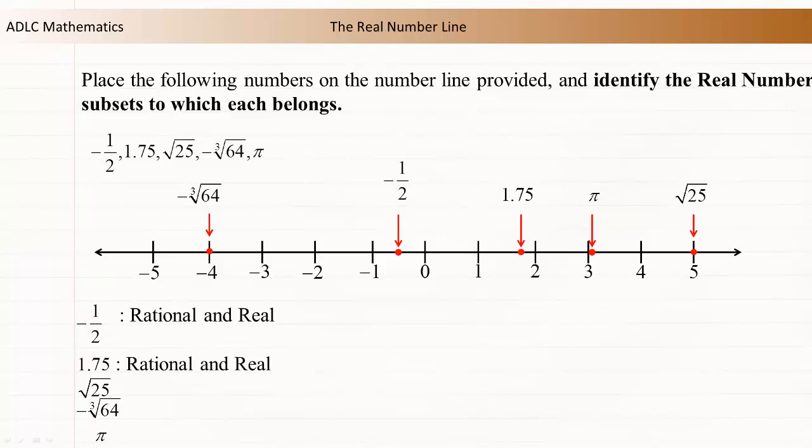Negative 1 half and 1.75 are both rational and real, since both numbers can be represented as fractions or decimals that terminate.